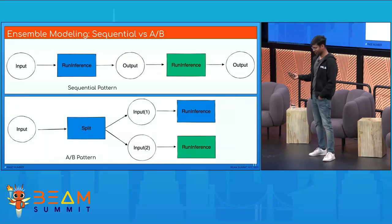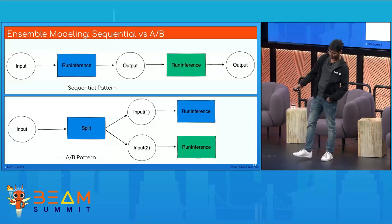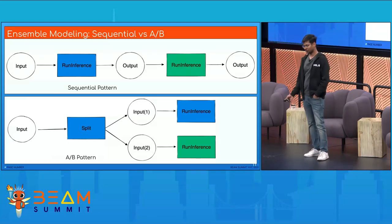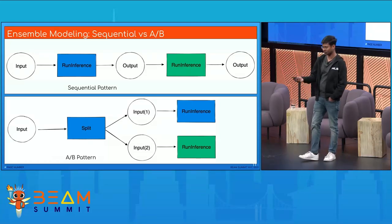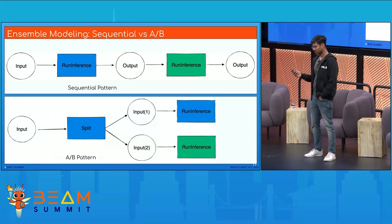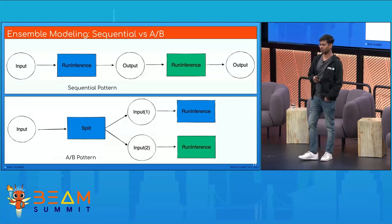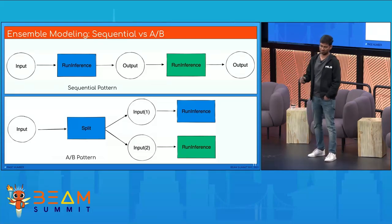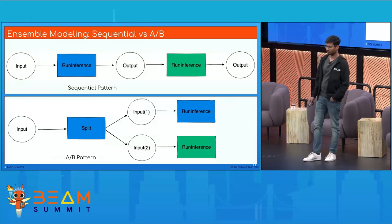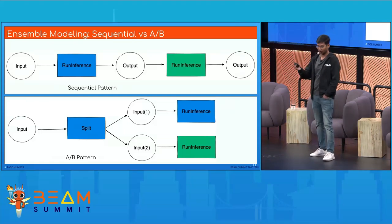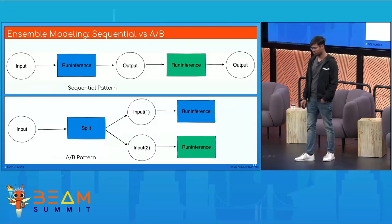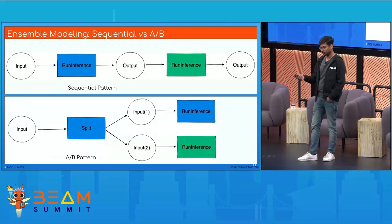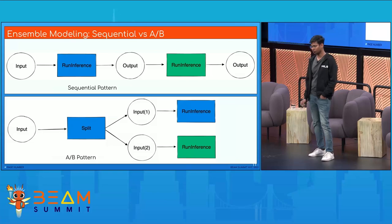We usually see two kinds of patterns when using multiple machine learning models. First, the sequential pattern, where the output of the first machine learning model goes as input to the second. Second, the A/B pattern, which is useful for A/B testing — you split your inputs into two parts and judge which machine learning model performs better.